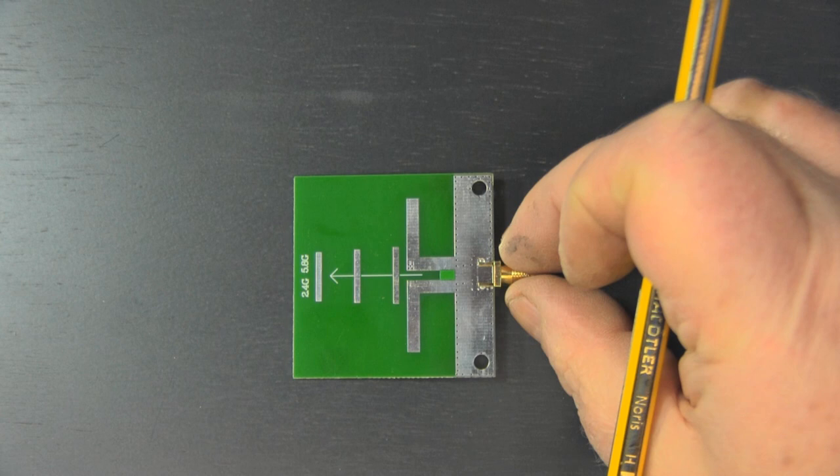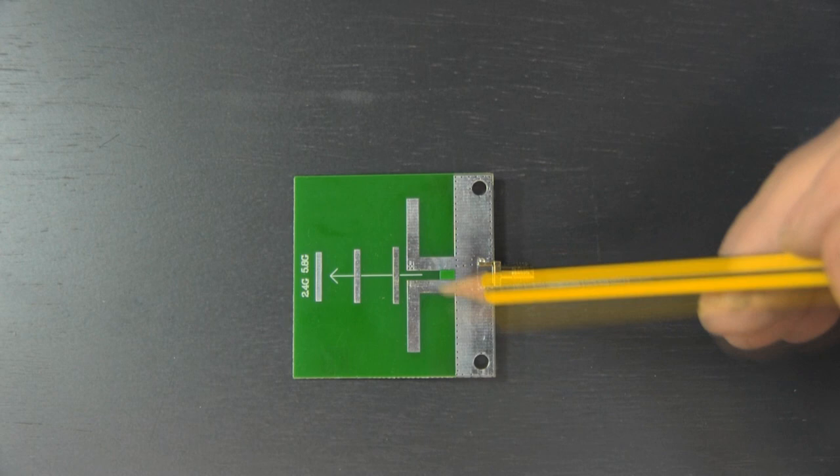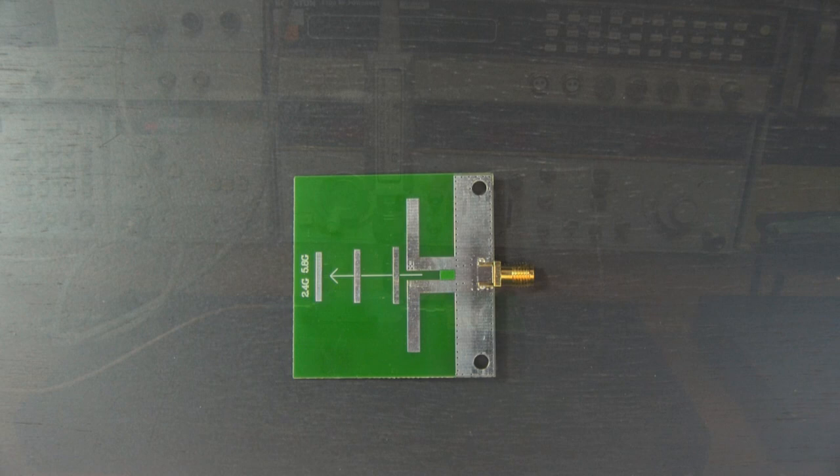Let's take this over to the network analyzer then and we'll see if the claims that it is a dual-band little Yagi antenna are correct, and it does work for 2.4 and 5.8.